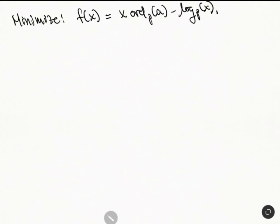Which is equal to x times ord_p(a) minus log_p(x). So if you do the computation, so what do we get? This gives a global minimum, so you do the second derivative test, at x_0, which is 1 over ord_p(a) times ln(p).